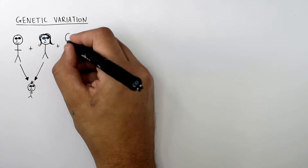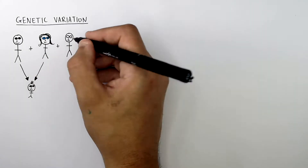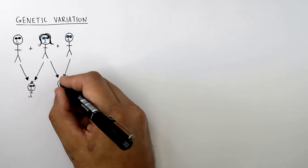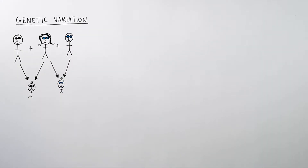The woman with blue eyes has another baby with a man with blue eyes, and they then have a child with blue eyes. The variation between these two children is that one baby has brown eyes and the other baby has blue eyes — that's a difference in their characteristic. The blue eye gene was inherited from the mom and the dad, so that is a variation caused by genetic inheritance.